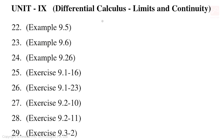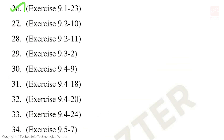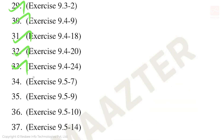Unit 9 five-mark questions: Examples 9.5, 9.6, 9.26. Exercise 9.1 sum number 16, 23. Exercise 9.2 tenth and 11th sum. Exercise 9.3 second sum. Exercise 9.4 sum number 9, 18, 20, 24. Exercise 9.5 seventh, ninth, tenth, and sum number 14.